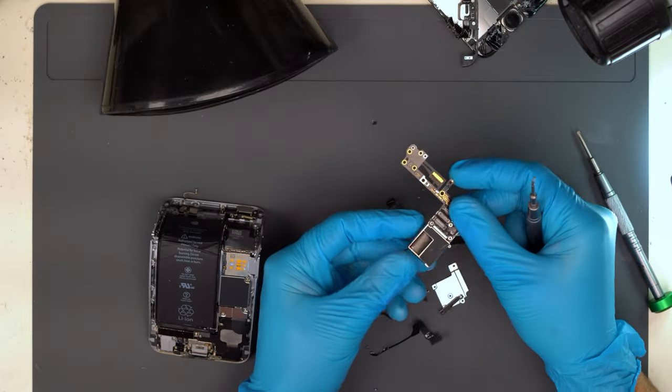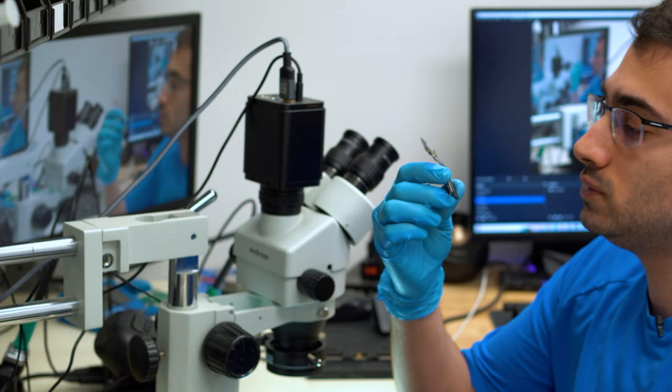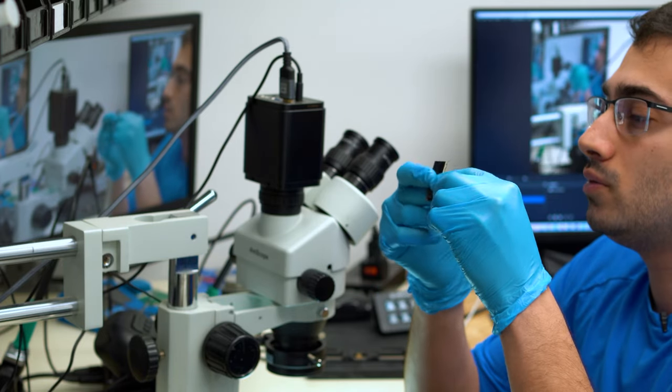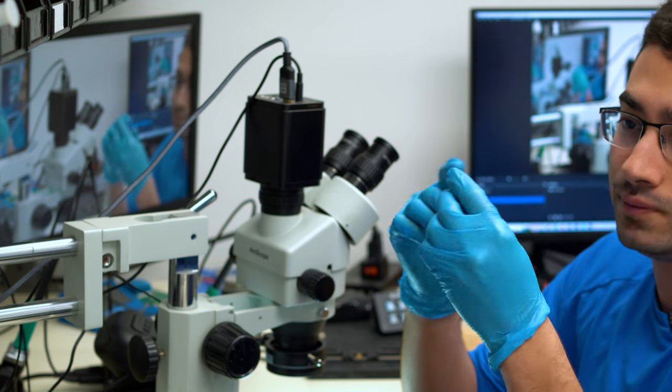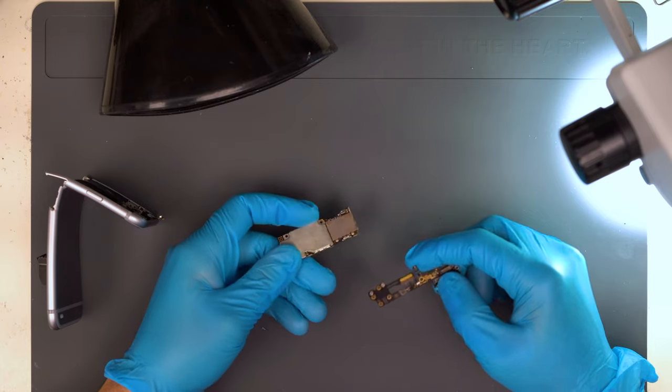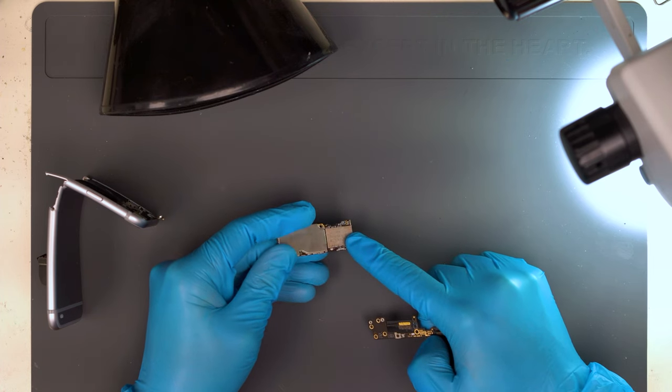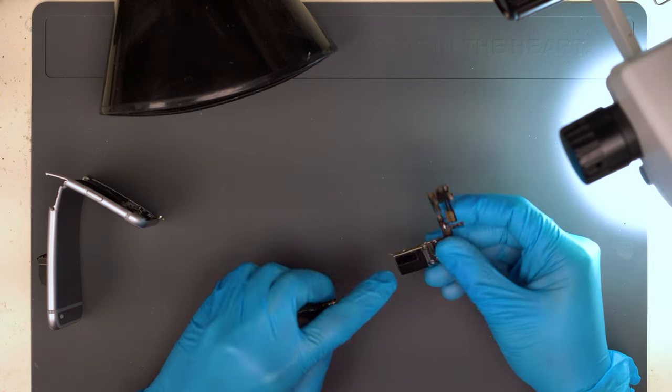All right, so we have the first section of the logic board removed. The CPU is beneath this shield. Hoping it's intact. What we're going to have to do is transfer the NAND and the CPU.